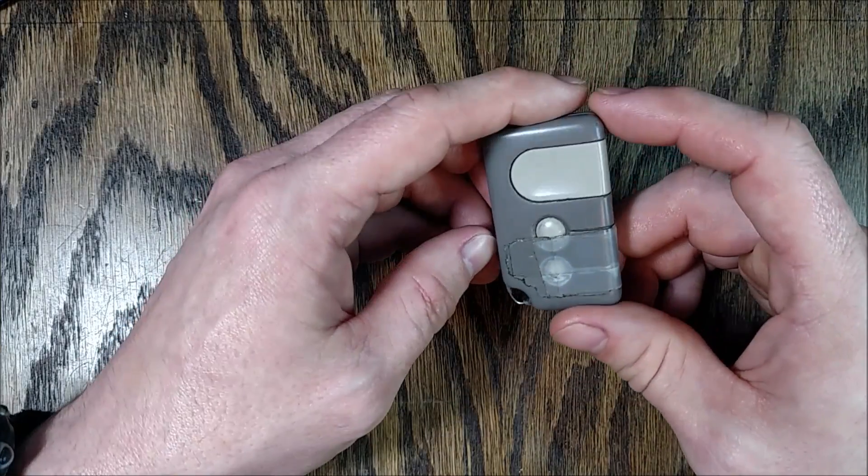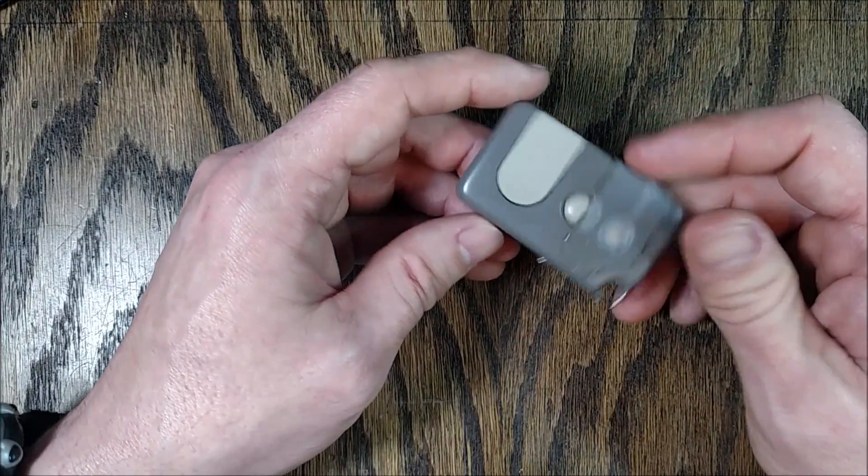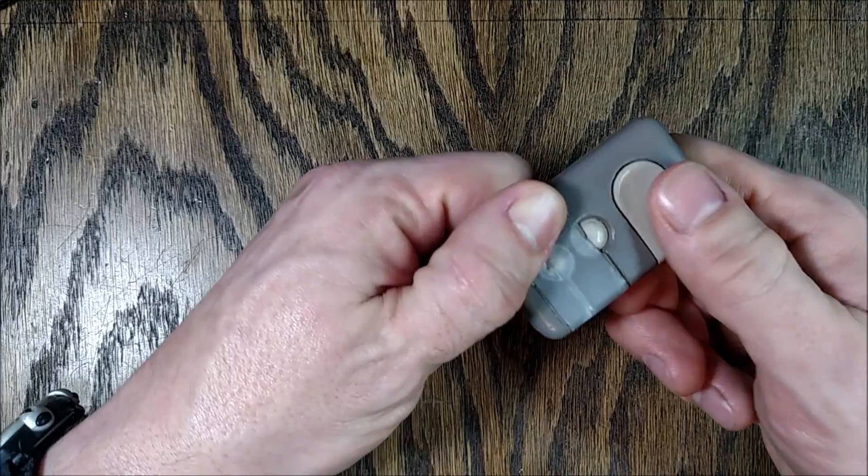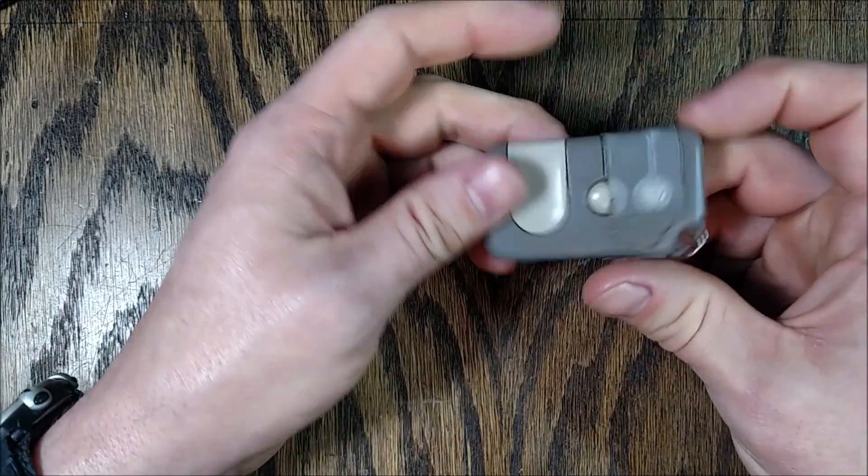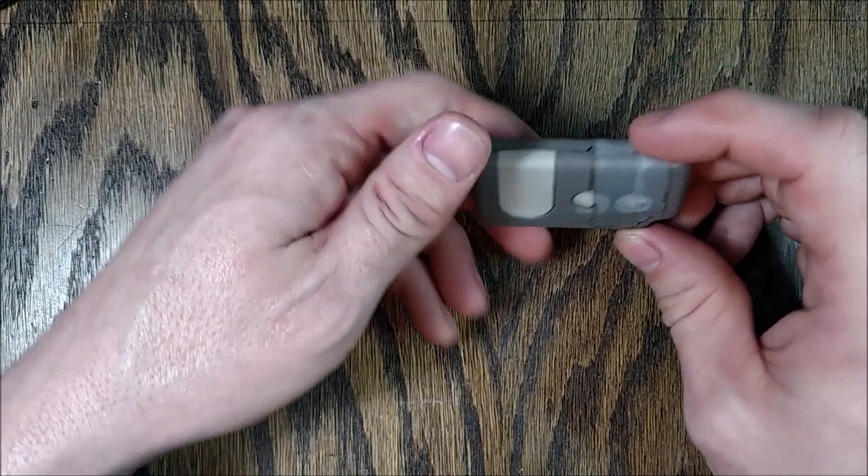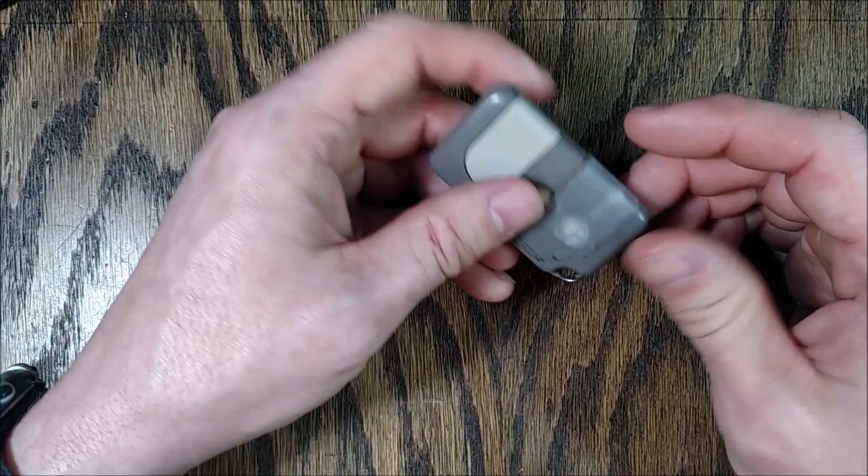But for a while now it's been running intermittently where I'd have to press the button three or four times to get the door to go up, and maybe hold the case together or wiggle it or hold this side while I hit the button over there. Then about a week ago it just quit completely, so I figured we'd open it up and see what kind of problems I can find inside.